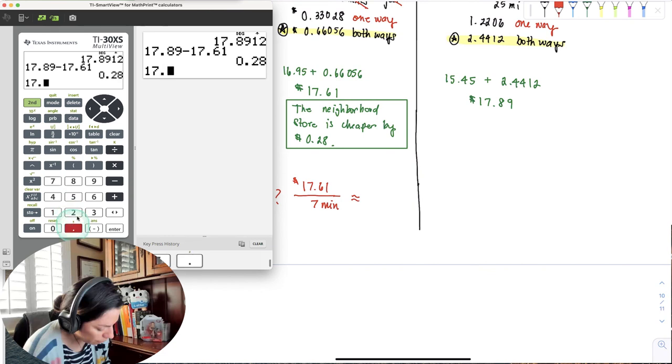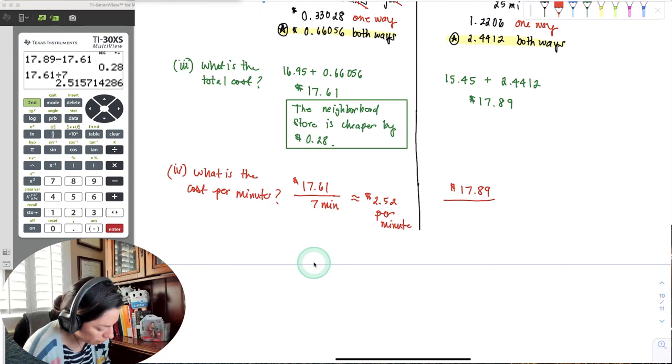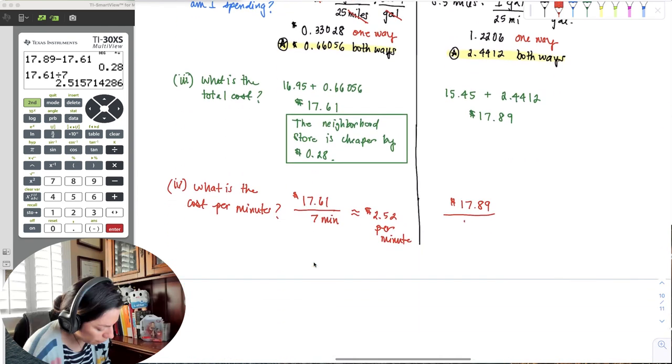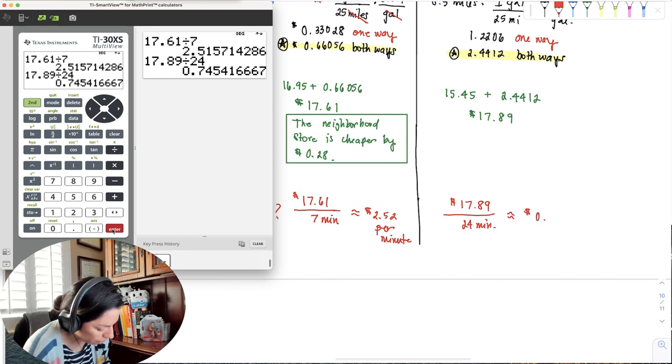Now if I did the across town, I would do $17.89, the total cost divided by how long it takes me to get to the across town store. So here I see that it's 8.5 miles away and it takes 24 minutes. So let me divide that by 24 minutes. Let's see how much it costs me per minute. So I'll do $17.89 divided by 24 minutes. And here it's going to cost me, and then rounding to the nearest cent, we could see this third digit is five. So five or higher, we'll up this by one. So 75 cents per minute.